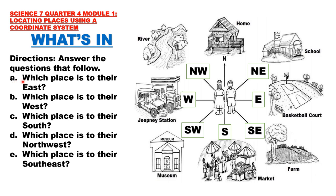Letter A — which place is to their east? The place to the east is the basketball court. Which place is to their west? To the west is the chimney station. Which place is to their south? To the south is the market. Which place is to their northwest? To their northwest is the river. Which place is to their southeast? In the southeast, we have the farm.